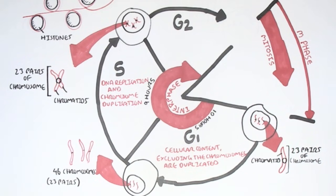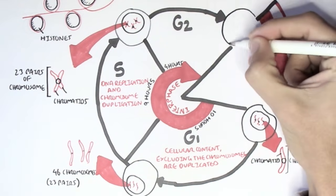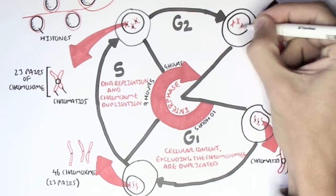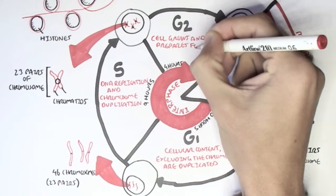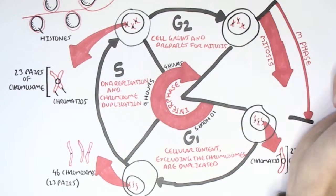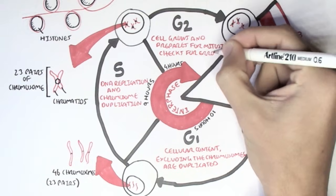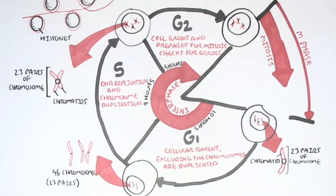After the synthesis stage, the cell will go on to growth 2, which goes on for about 4 hours. This is where the cell grows and prepares for mitosis, and it also checks for errors as well. At the end of the G2 phase, the cell will still have 46 chromosomes and 92 chromatids.